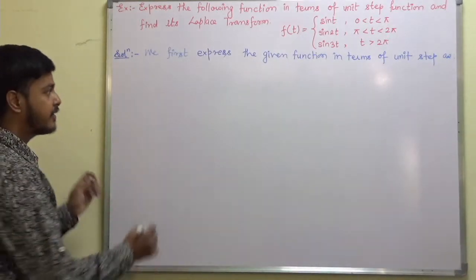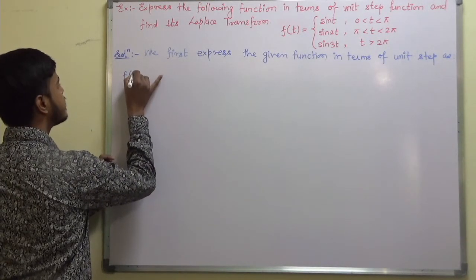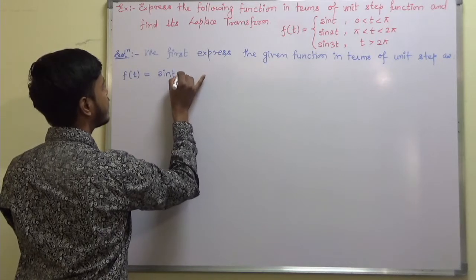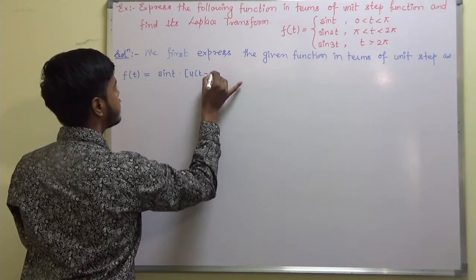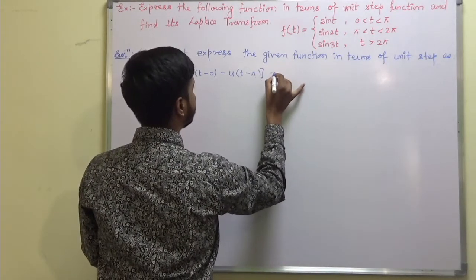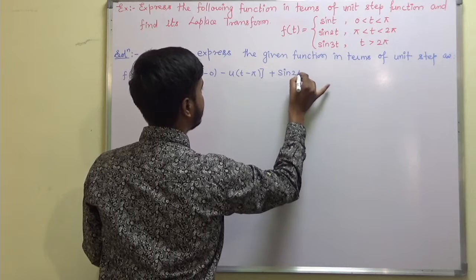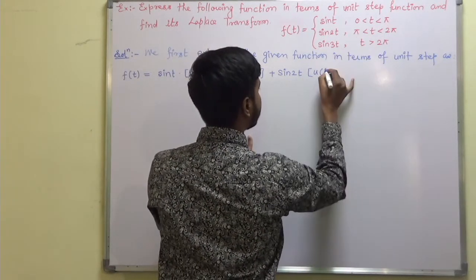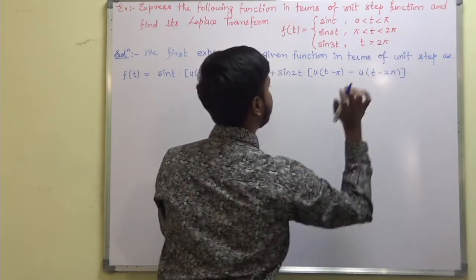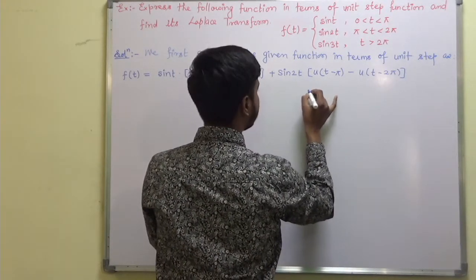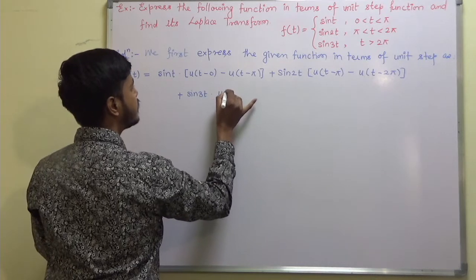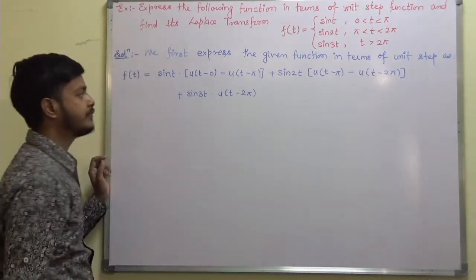We first express the given function in terms of unit step functions. So f(t) equals sin(t) · [u(t−0) − u(t−π)], plus sin(2t) · [u(t−π) − u(t−2π)], plus sin(3t) · u(t−2π).